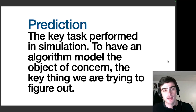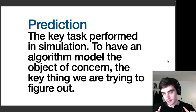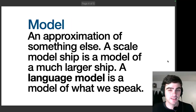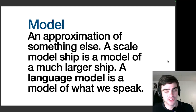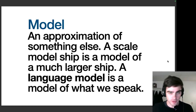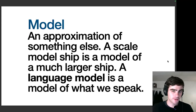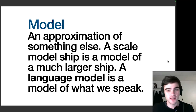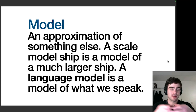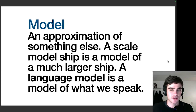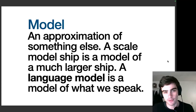Another way to describe prediction and simulation is that the computer develops a model of us — and this is when we start getting into what a language model is, and what a generative AI model is. A model, in the most vague of terms, is an approximation of something else. You can think of it like a scale model ship, say 1 inch equaling 10 feet — it's a tiny version of a bigger thing, meant to mimic it. And you can make a model out of everything: out of wood, or out of neural networks.